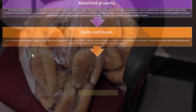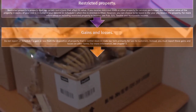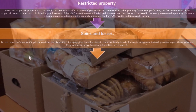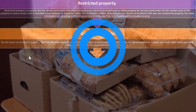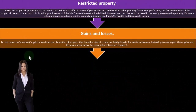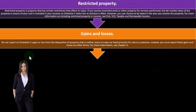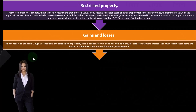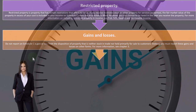Do not report on Schedule C a gain or loss from the disposition of property that is neither stock in trade nor held primarily for sale to customers. Instead, you must report these gains and losses on other forms.